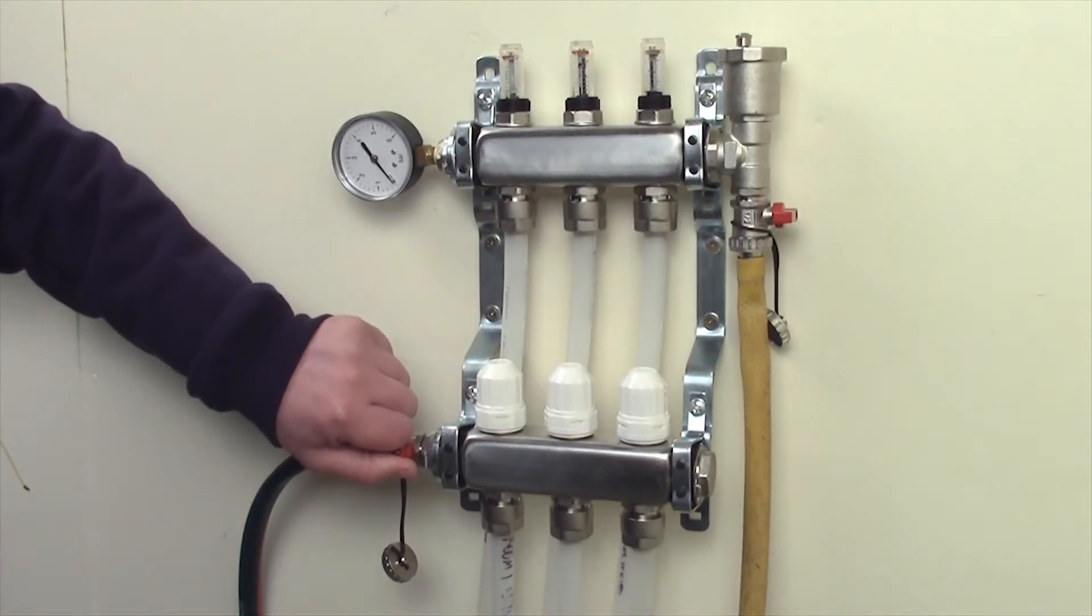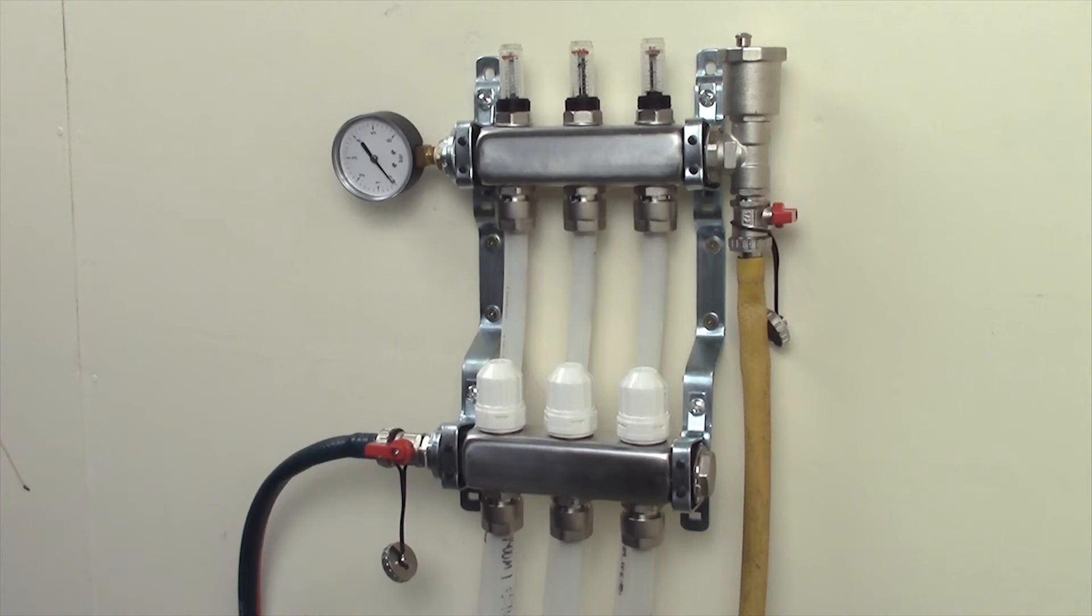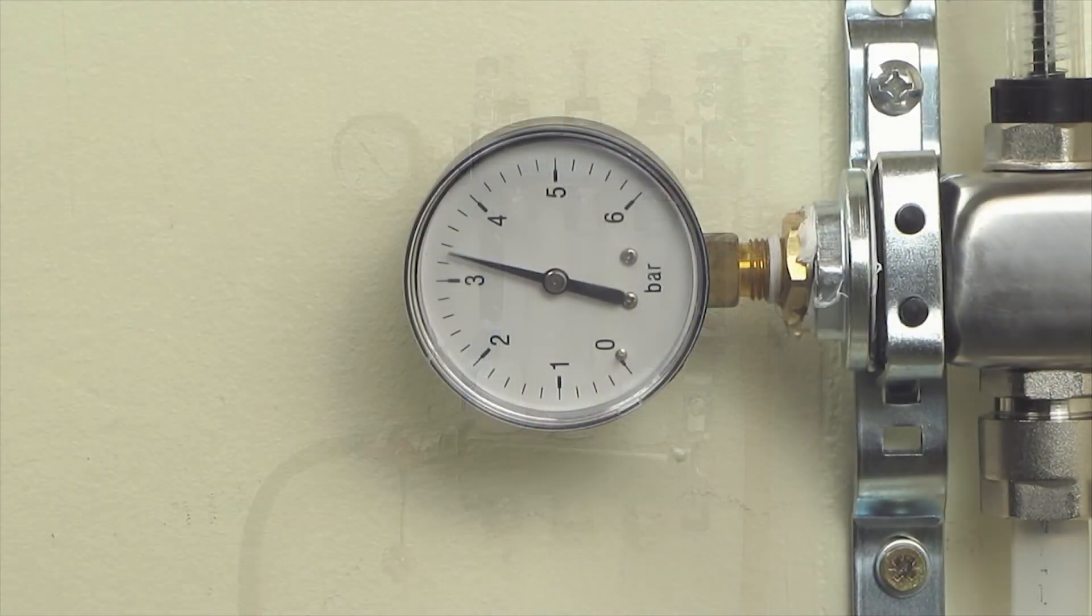Now open the drain cock on the bottom left of the return bar, checking that the drain hose is in the bucket. The pressure in the manifold will be released.